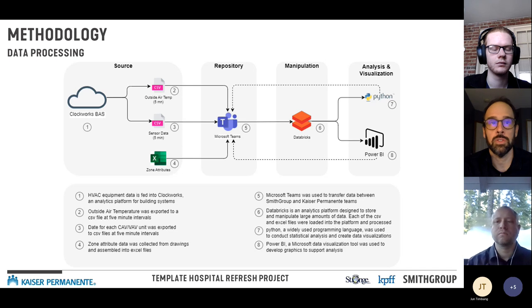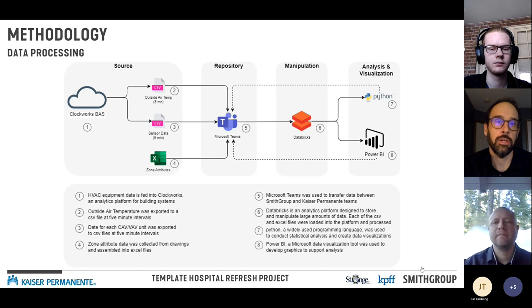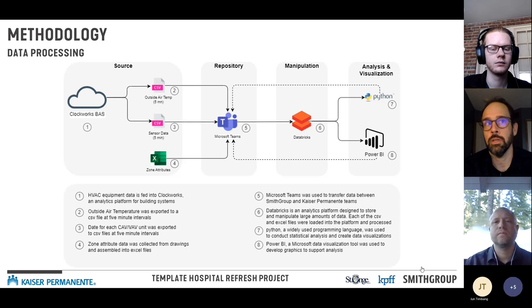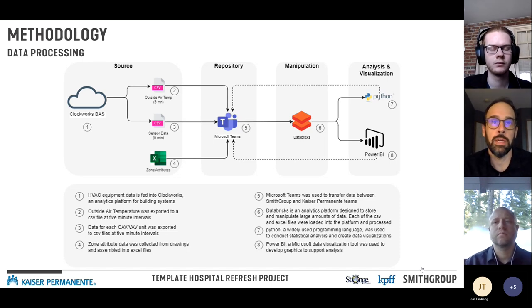Beyond the sensor data, we needed to connect to actual zone information — zone type, square footage, design loads — provided by Kaiser Permanente staff. Microsoft Teams functioned as the repository for sharing data back and forth between teams. The actual heart of data manipulation was done in Databricks, a cloud platform Smith Group uses as our big data solution, supplemented by Python and Power BI for analysis and visualization.